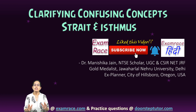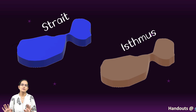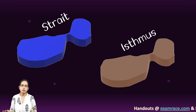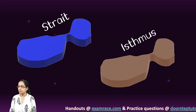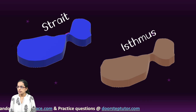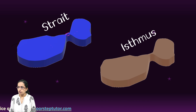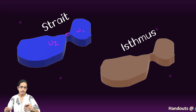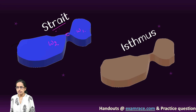Understanding the difference between a strait and an isthmus. A very simple understanding comes with this diagram. A strait is simply a narrow water parcel that connects two major water bodies — water body one and water body two being connected by a narrow passage — and that is what is known as a strait.